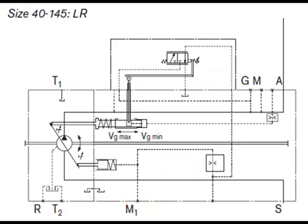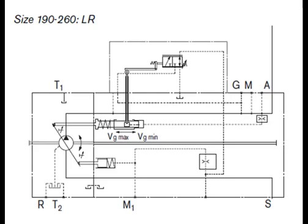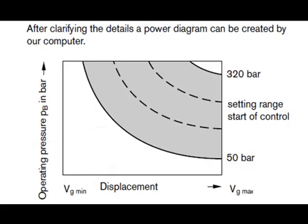The power control regulates the displacement of the pump depending on the operating pressure so that a given drive power is not exceeded at constant drive speed. The precise control with a hyperbolic control characteristic provides an optimum utilization of available power.